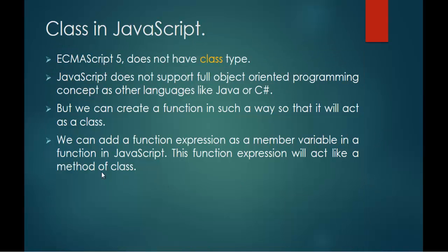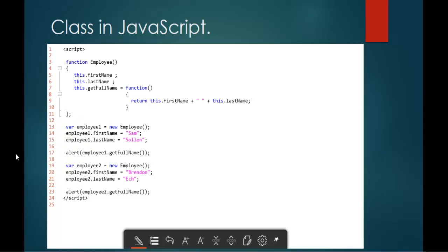Before moving to the next slide, let me read out this sentence: we can add a function expression as a member variable in a function in JavaScript, and this function expression will act like a method of a class. Here in the slide, I have a function employee, and I have the get full name variable or property, which is a function expression. This function expression will act like a method of a class. Instead of alerting every time employee dot first name and last name, I have defined a method which prints the full name of an employee.